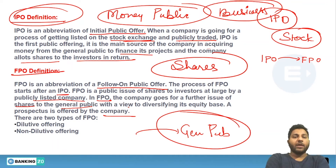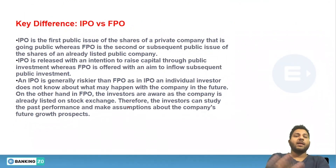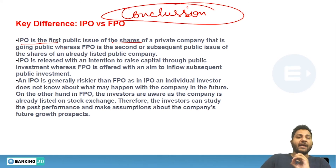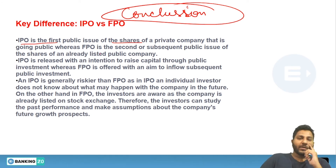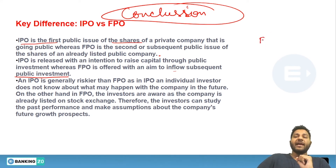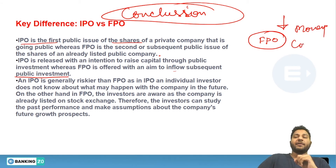Key differences between IPO and FPO: First, IPO is the first public issue of shares of a private company that is going public, whereas FPO is the second or subsequent public issue of shares of an already listed public company. Second, IPO is released with the intention to raise capital through public investment, whereas FPO is offered with the aim to inflow subsequent public investment.